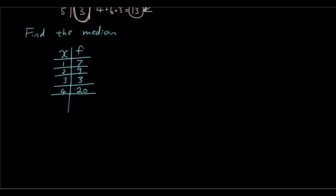So we're now going to show you the answer. The first thing you're going to have to do is create a new column called cumulative frequency, which is the running total of the frequency column. So we have 7, then 7 plus 9 is 16, then 16 plus 3 is 19, then 19 plus 20 is 39.